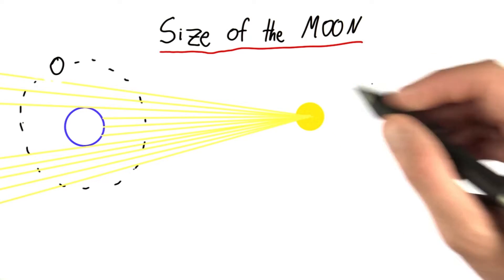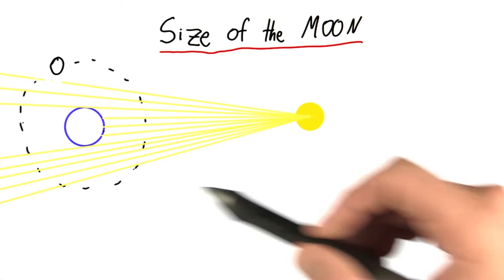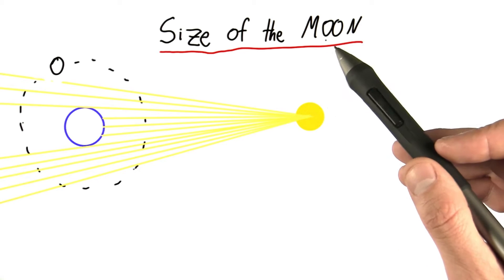So you've calculated the circumference of the earth. That's a huge accomplishment. But now, let's move on. Let's calculate the size of the moon.